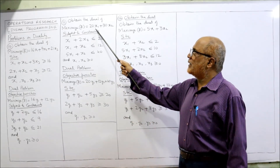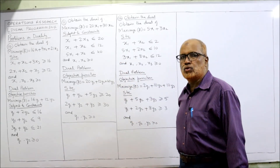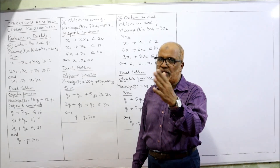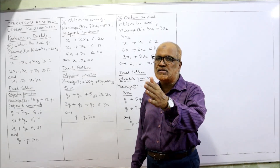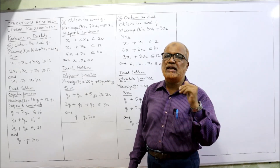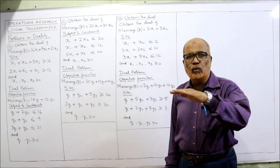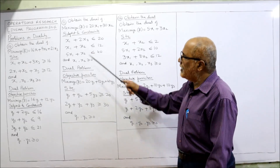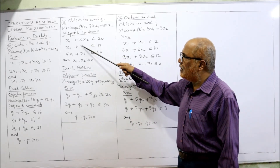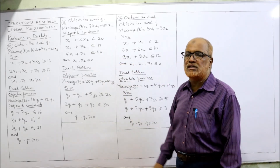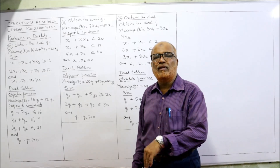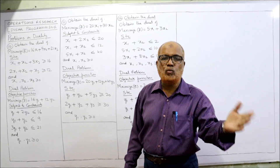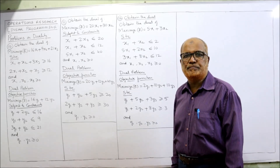The primal has two variables (x1, x2), so the dual will have two constraints. The primal has three constraints, so the dual will have three variables: Y1, Y2, Y3.